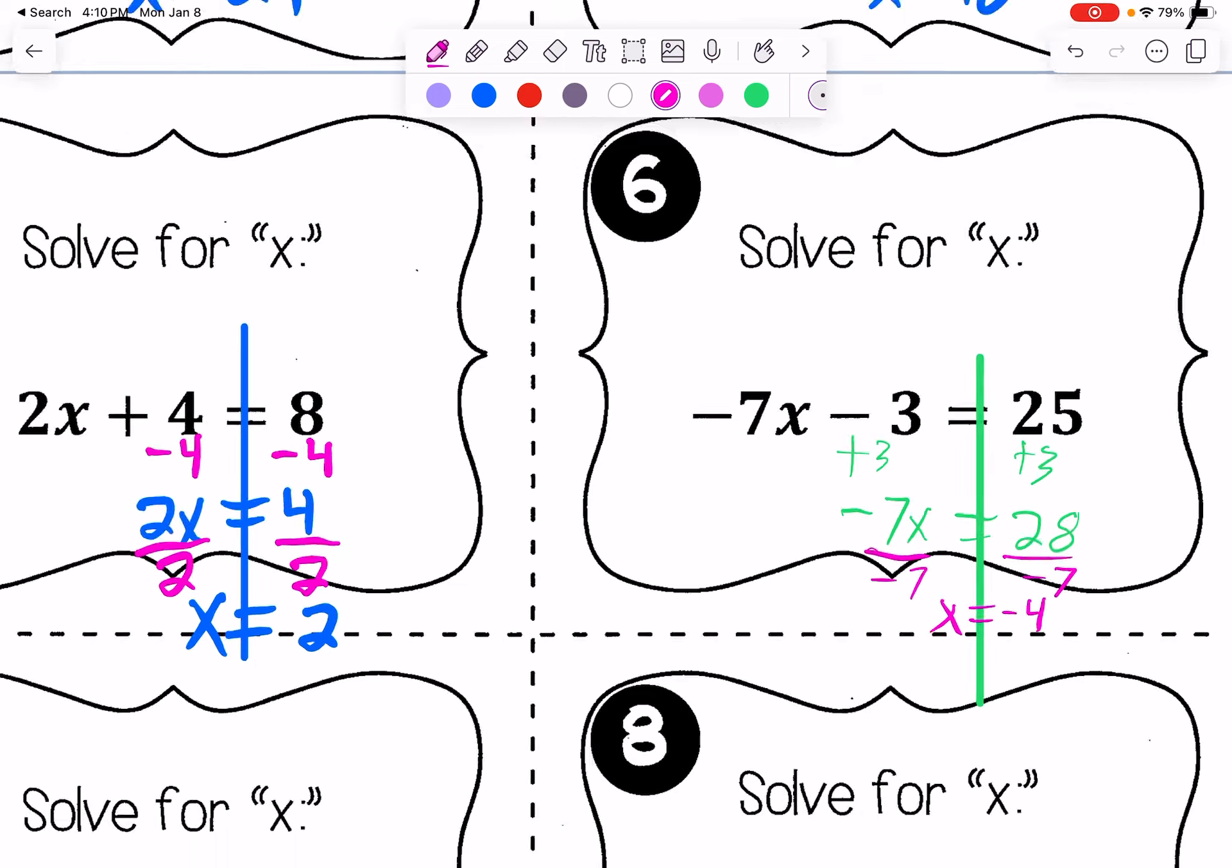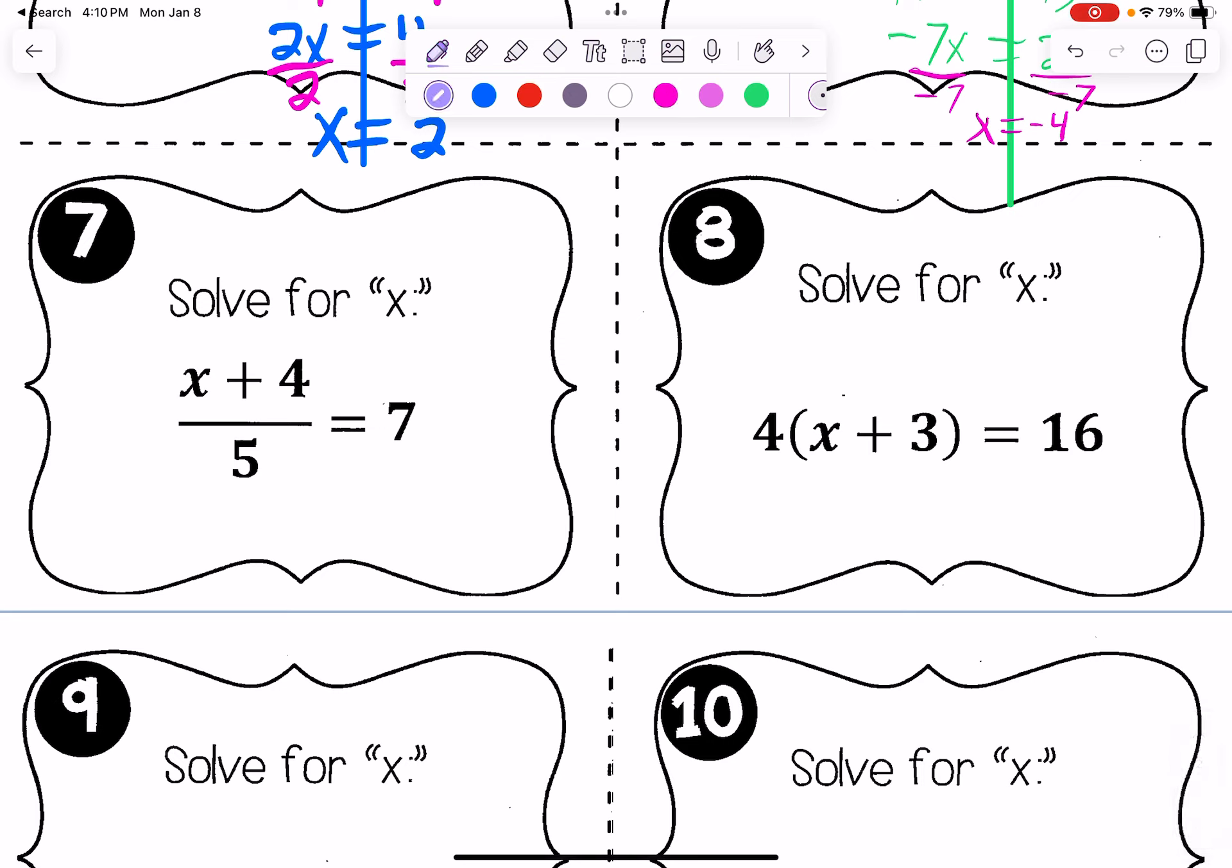I'm sorry, I know these are a little smushed, unfortunately. Next time, I'll make it better. For this one, we want to get rid of this divide by 5 denominator, so we'll do that by multiplying both sides by 5. That leaves us with x plus 4 equals 35. Minus 4, get x equals 31.